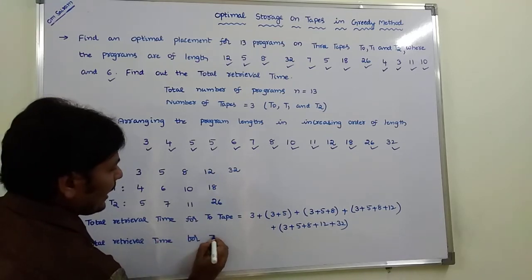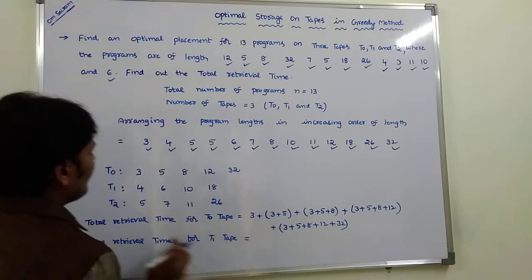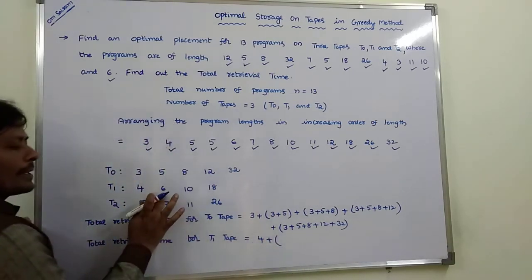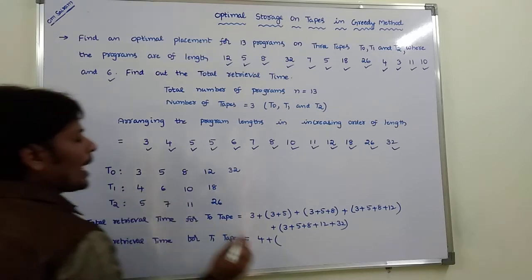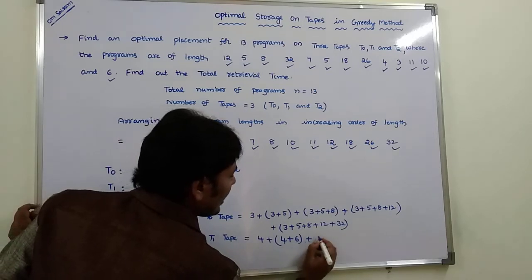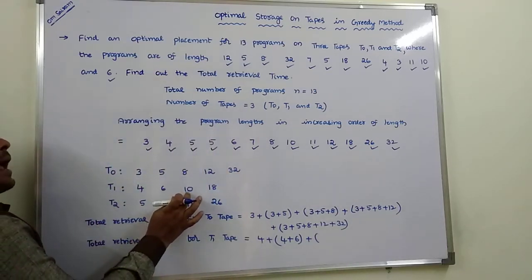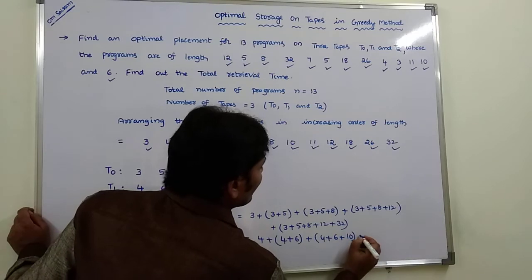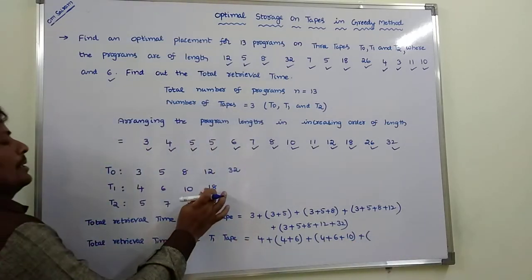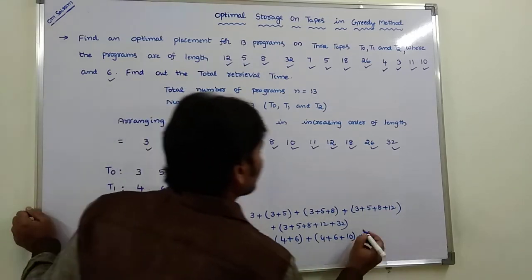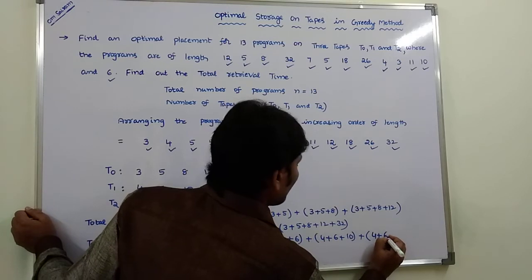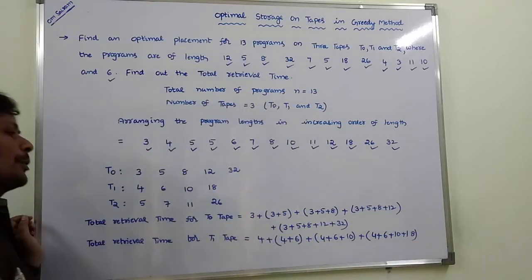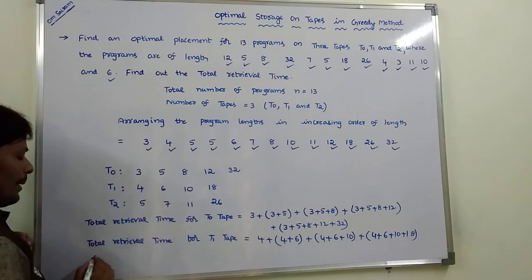Next, the total retrieval time for T1 tape. To access each program on T1, we must first go through all preceding programs on that tape. The total retrieval time for T1 tape is 72.